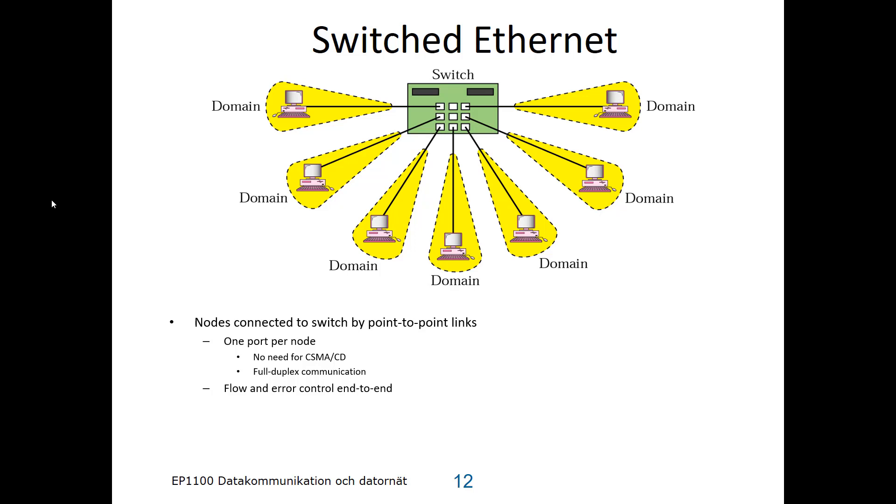And flow and error control can be done end-to-end, or between the switch and the nodes. The switch forwards frames based on the destination address, as explained before. And that learning algorithm for building the forwarding table is exactly as I described it before, even now when there is only one node per port of the switch or bridge.